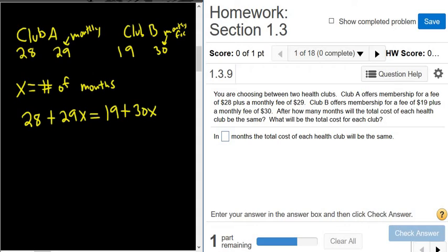If we solve this for x, let's see what the easiest way is. I'll start by subtracting 19, so minus 19, minus 19. These cancel. 28 minus 19, let's see, 28 minus 10 is 18. Subtract 9 more and you get 9, so this is 9 plus 29x equals 30x.